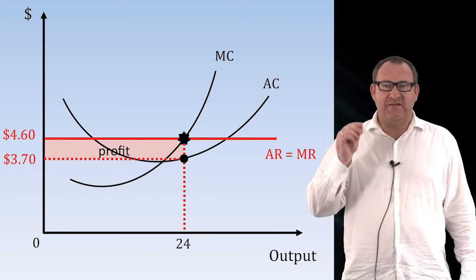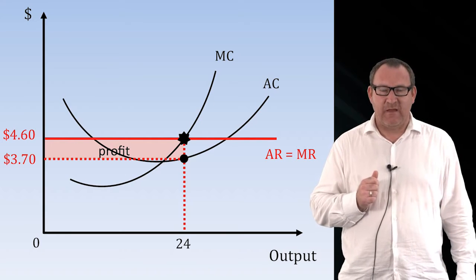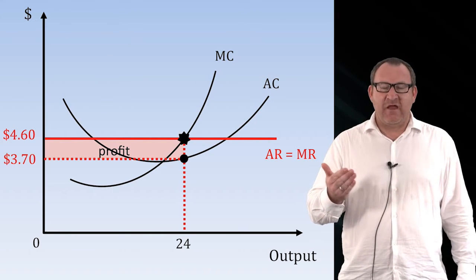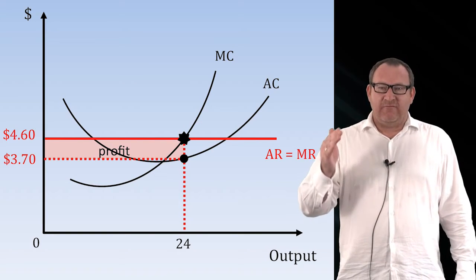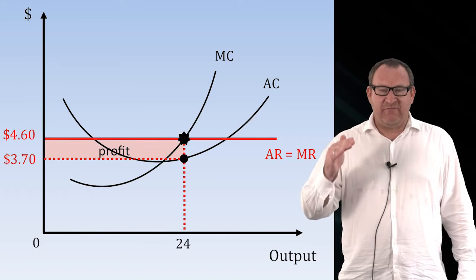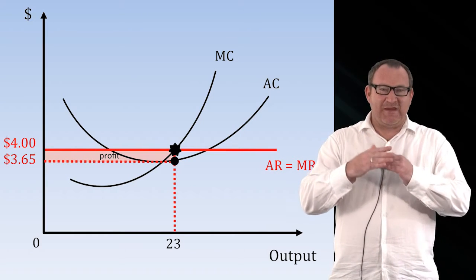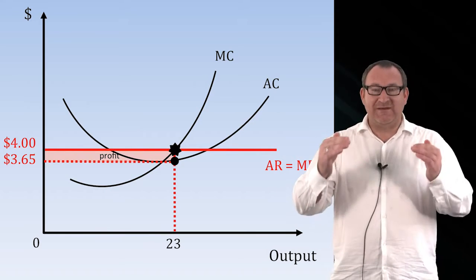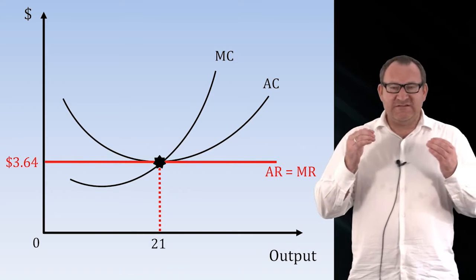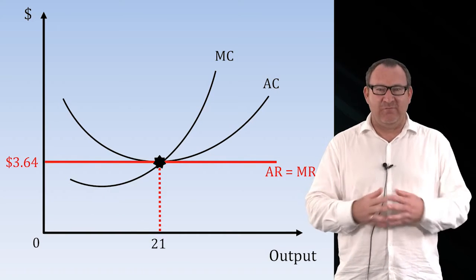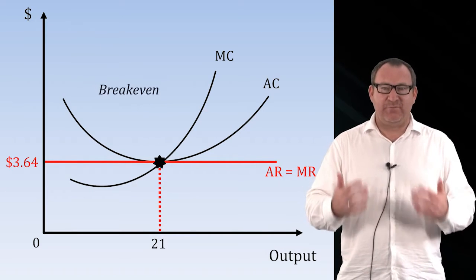Now what happens to the firm's average revenue when prices fall? Average revenue also falls, as does marginal revenue. If the marginal revenue and the average revenue fall, then profits get squeezed. And this will keep happening until there are no profits being made by any of the firms in this market — that is, all of the firms are breaking even.